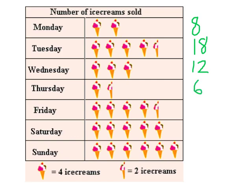On Friday, we have four, eight, twelve, sixteen, plus two more — same as Tuesday, we have 18. Saturday looks like just half of an ice cream more than on Friday, which is two more, so that's 20. And for Sunday, we have one, two, three, four, five, six ice cream cones, and six times four is equal to 24 ice creams sold on Sunday.